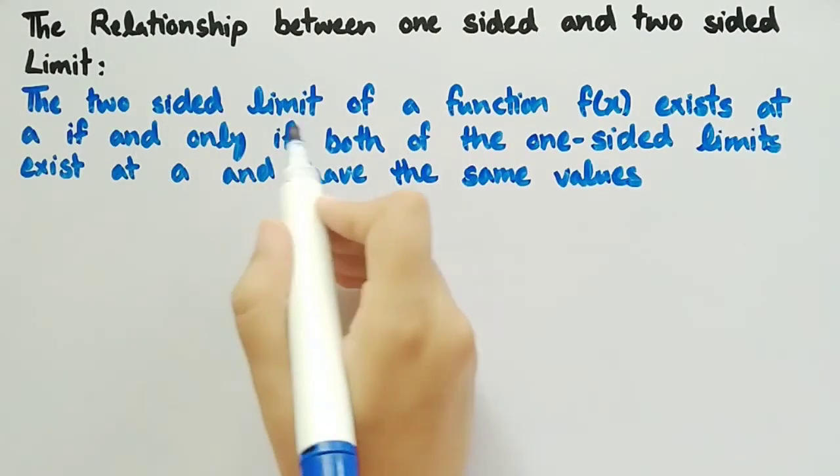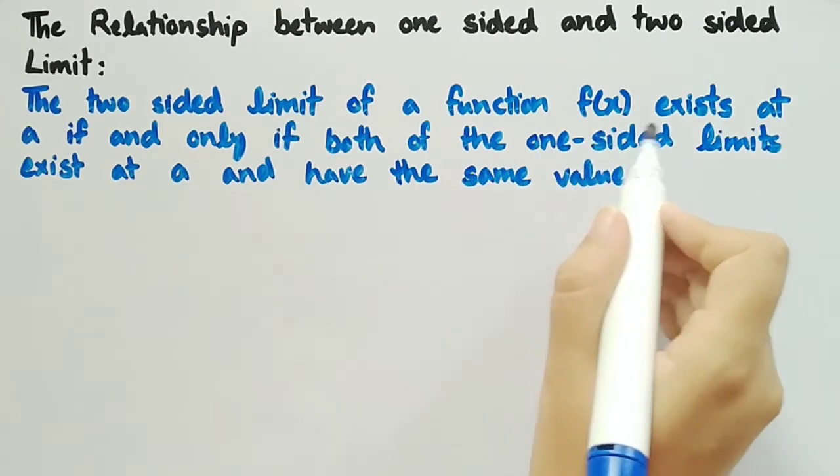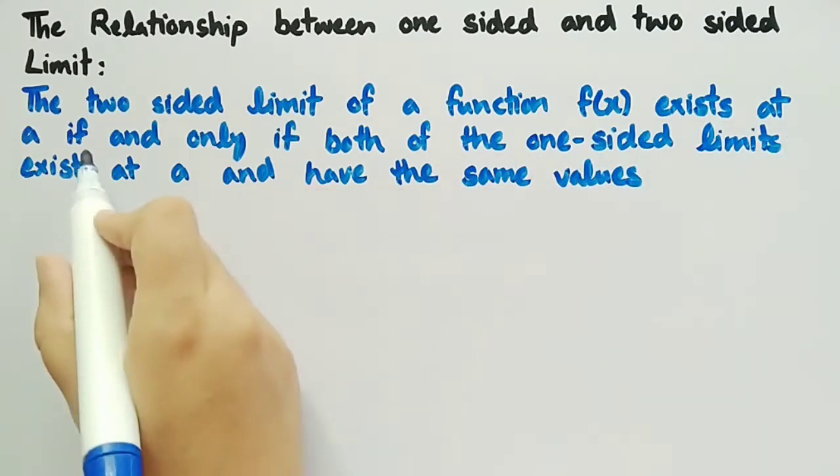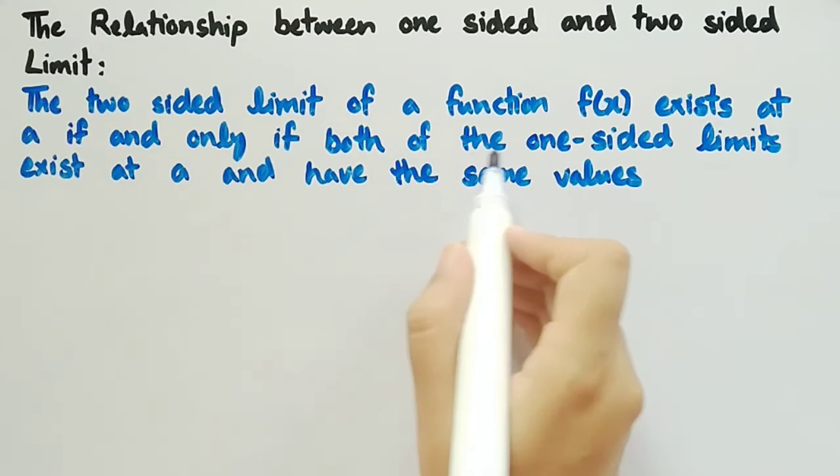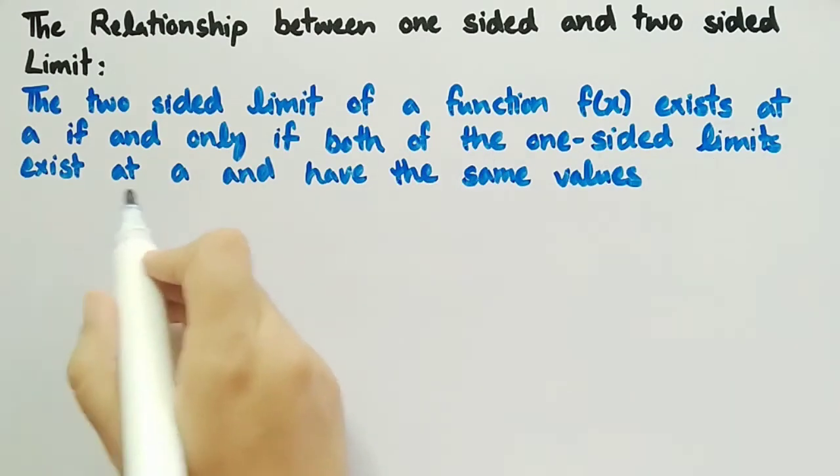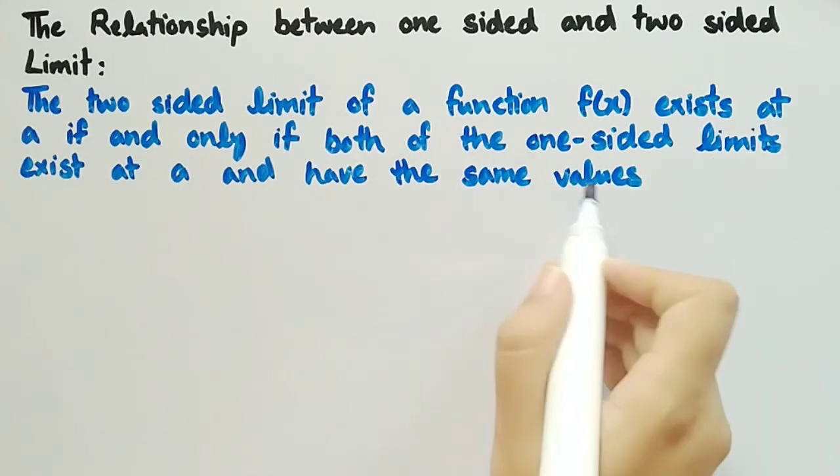The two-sided limit of a function f(x) exists at a if and only if both of the one-sided limits exist at a and have the same values.